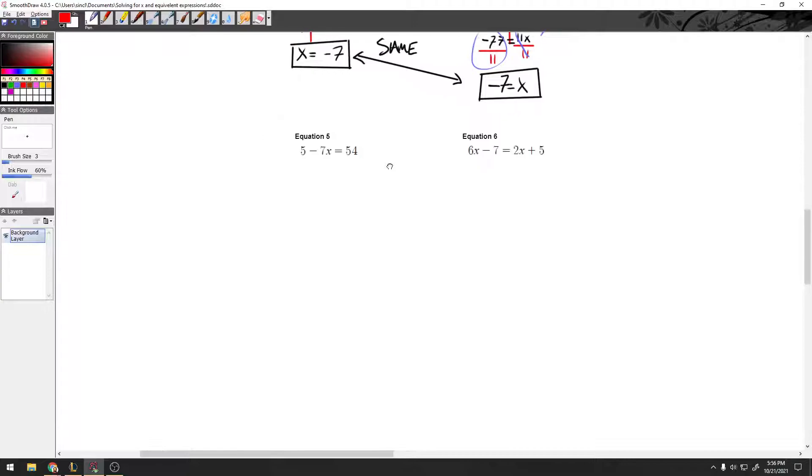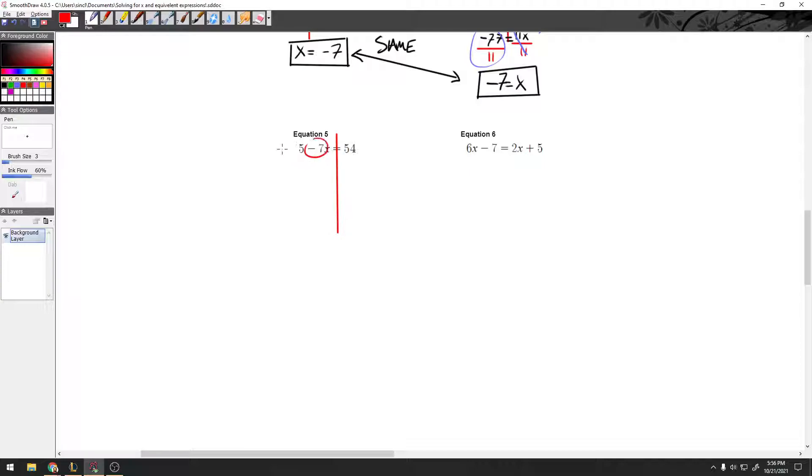Alright, here comes equation 5. This one's nice and straightforward. It's just as easy as the first one. We need to get rid of this negative 7 and the 5 so that my x can be all alone. So the 5 is the easiest one to get rid of. He's not right up on the x, so I just go negative 5 and negative 5. These cross out. And then I can bring down the negative 7x. So I have negative 7x equals, and I believe this would be 49.